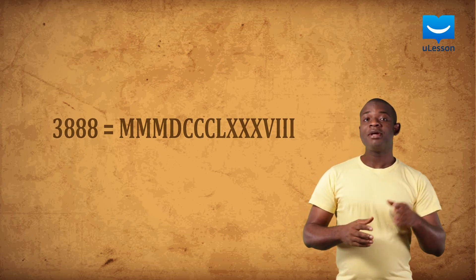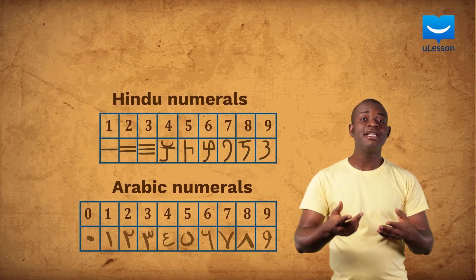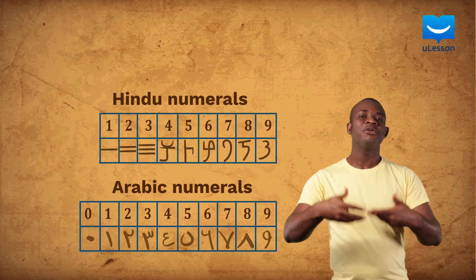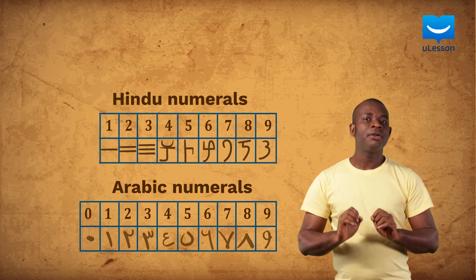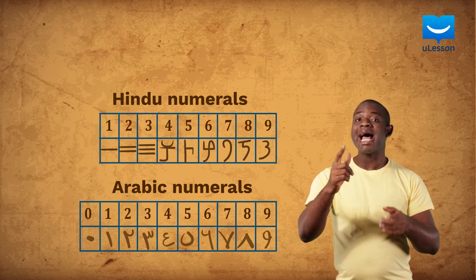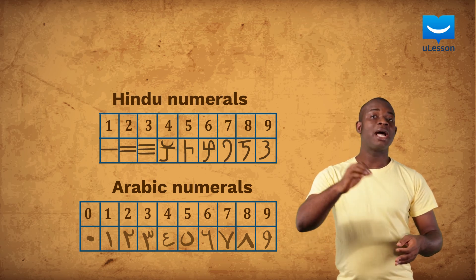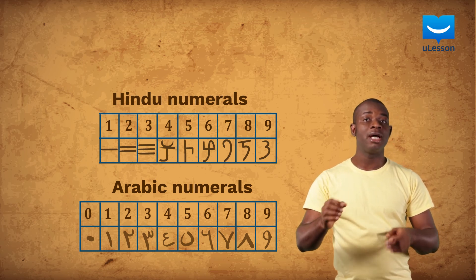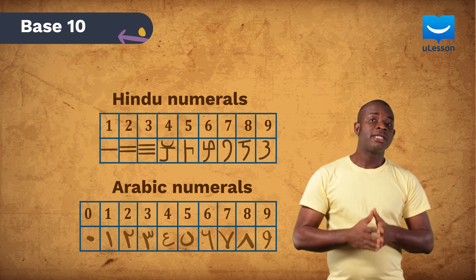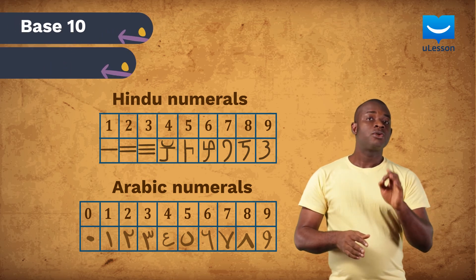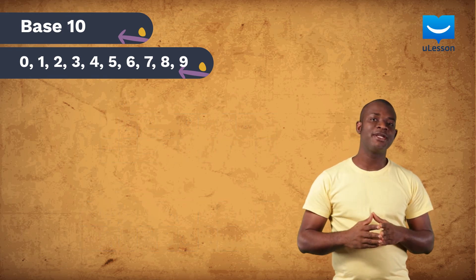The Hindu-Arabic numerals solved this problem by using a place value system to record numbers. They are a combination and modification of the Hindu and Arabic numerals, which led to the base 10 system — a system that contains digits 0 to 9 that is used for counting today.